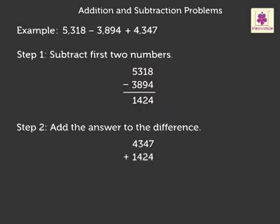Now, let us add 4,347 to the difference 1,424. Thus, by adding, we get the sum as 5,771.